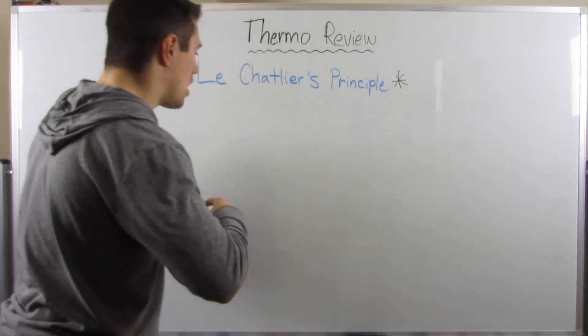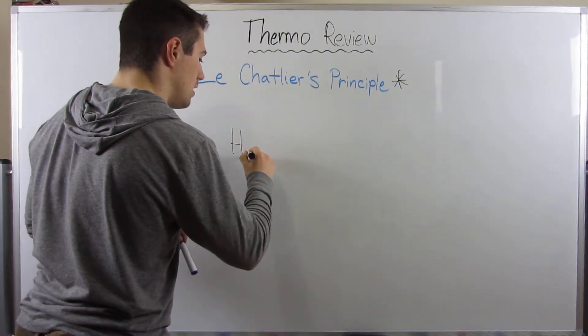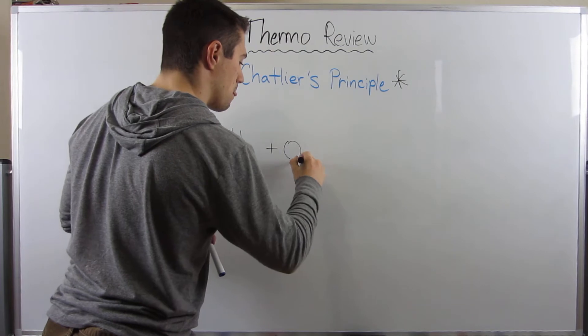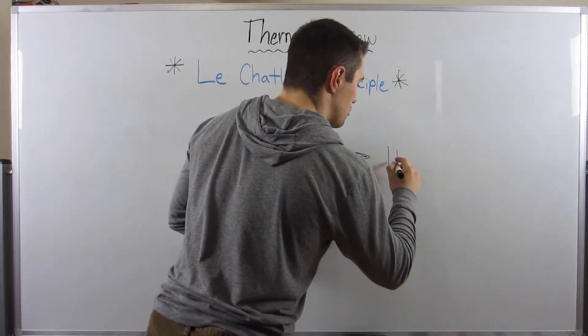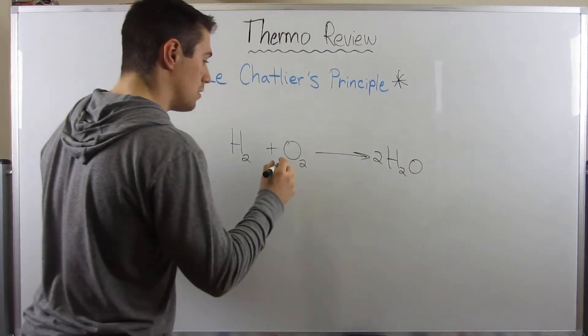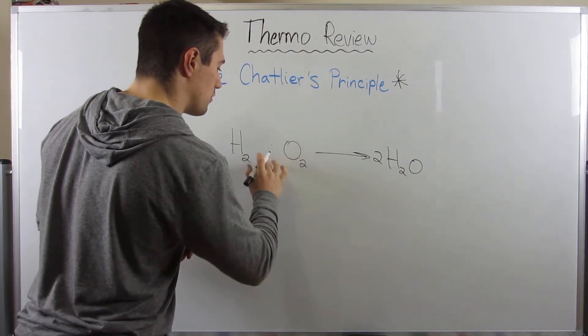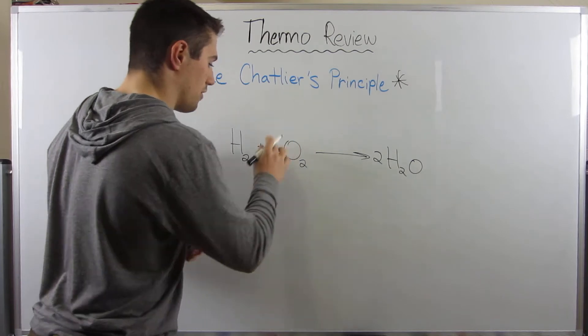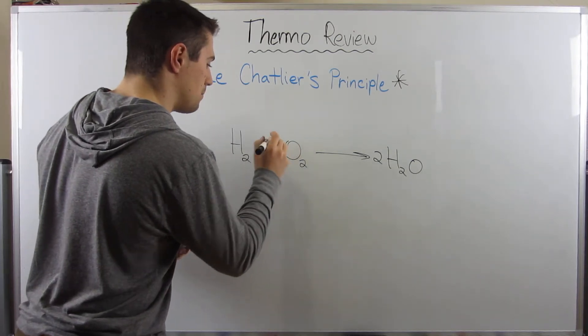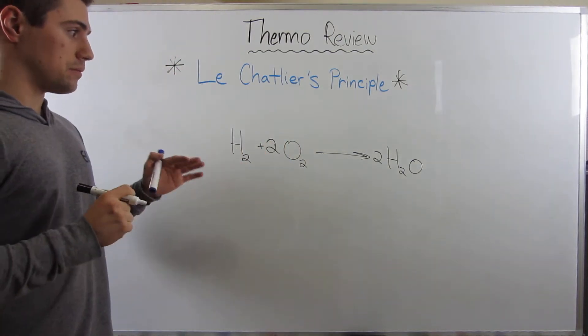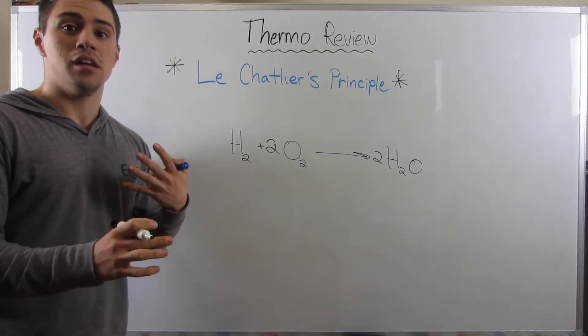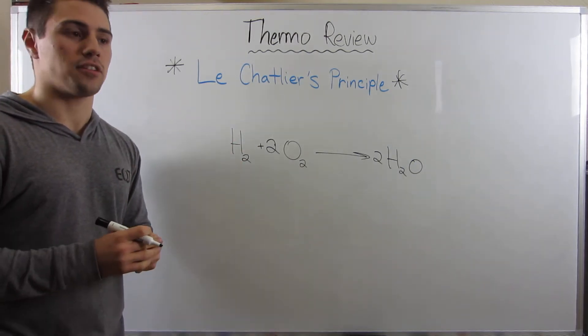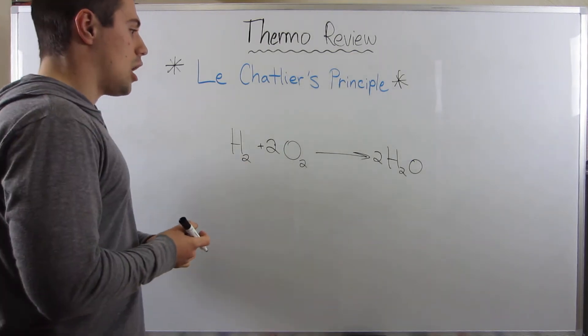Let's talk about the other reaction we discussed when we were talking about entropy. H2 plus O2 goes to H2O. We need to balance this really quickly. I'm going to add a two there and add a two over there. We talked about temperature. Let's talk about pressure. That's another way we can disrupt the equilibrium. We're just talking about different variables we can change.